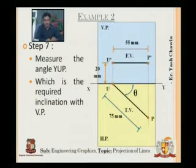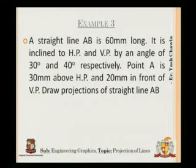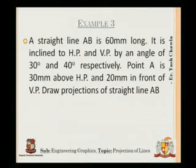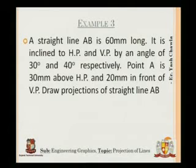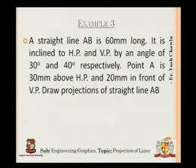Now let's move to the third problem — the case where the line is inclined to both the vertical plane and the horizontal plane. A straight line AB is 60mm long, inclined to HP and VP by angles of 30 degrees and 40 degrees respectively. Point A is 30mm above HP and 20mm in front of VP. Draw the projections of straight line AB.